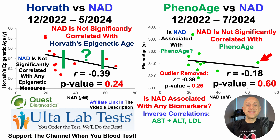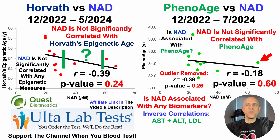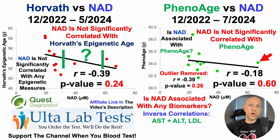Higher NAD is significantly correlated with lower AST and ALT, which is potentially good news because relatively high values — getting towards 40 and above — are associated with an increased risk of all-cause mortality. Higher NAD is also significantly correlated with lower LDL, which in terms of heart disease mortality risk could be good news. If you want to see the actual R-values and p-values for all 25 correlations, that's on the correlations tier on Patreon.